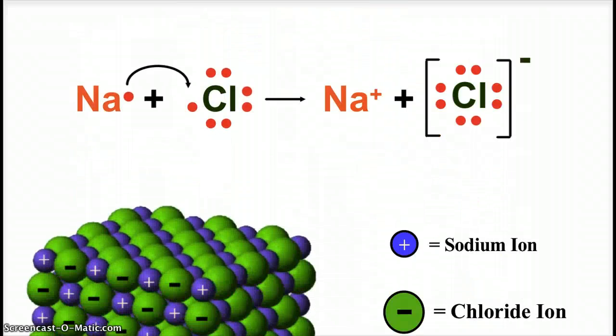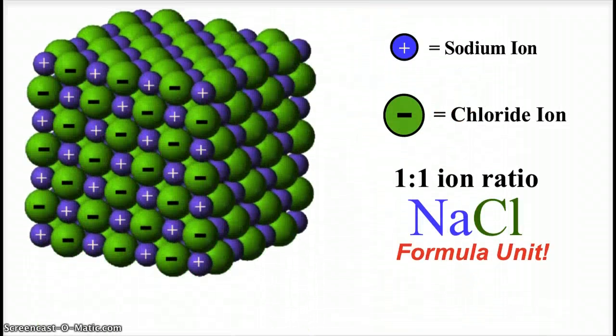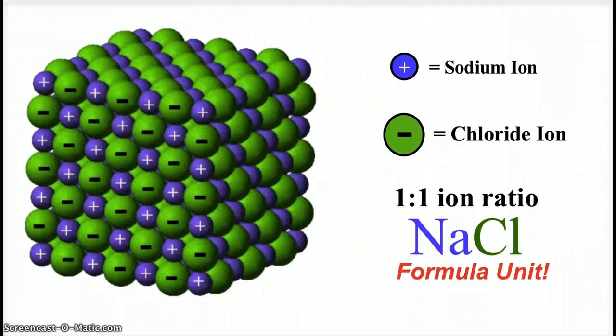And so what ends up happening, of course, is that this doesn't happen just one sodium atom with one chlorine atom. It happens with billions and billions and billions of them. And these ionic compounds form these beautiful crystalline structures. Here, it's a one-to-one ion ratio. And so that's why we have sodium chloride as the formula unit. If it was calcium chloride, calcium is a plus two ion. We would have twice as many chlorides as calcium ions. And we would have a slightly different crystal structure.